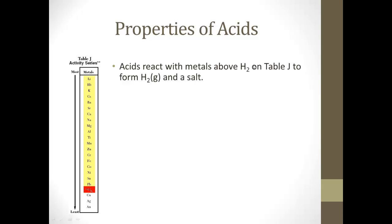Acids react with metals above the H2 on table J to form hydrogen gas and a salt. So if you take any of these metals and put them in an acid, they're going to react and give off hydrogen gas and make a salt. Acids have a pH of less than 7.